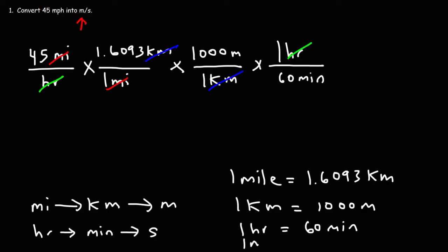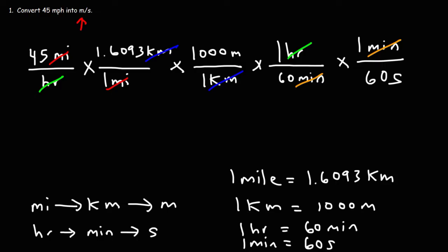We know that one minute is equal to 60 seconds. So in the next fraction, we're going to put one minute on top and 60 seconds on the bottom, so that we can cancel out the unit minutes. Now we need to plug in the numbers to get the answer. For numbers on top of the fractions, we're going to multiply, and then divide by the numbers on the bottom of the fractions.